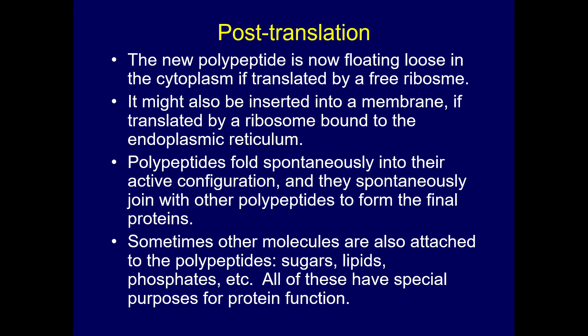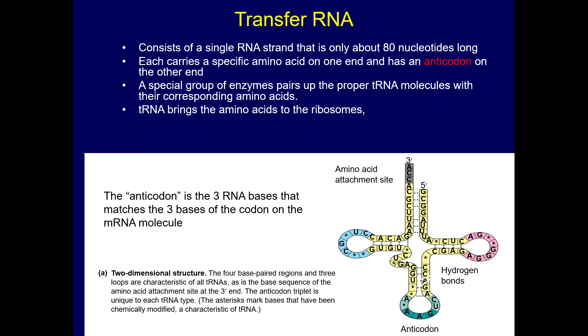Sometimes other molecules are attached to the protein — like sugars, fats, or phosphates — so the protein can do what it needs to do. Transfer RNA is part of this process: it's a single strand of RNA about 80 nucleotides long, and each carries a specific amino acid. These are the molecules that carry amino acids so they can be built into the protein.